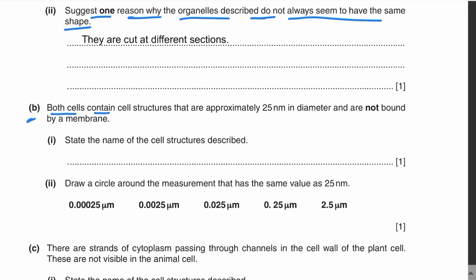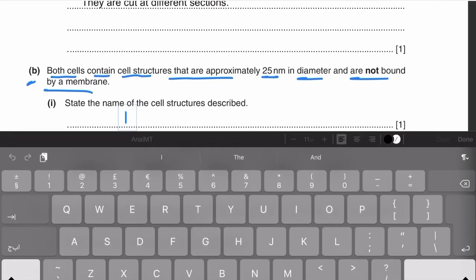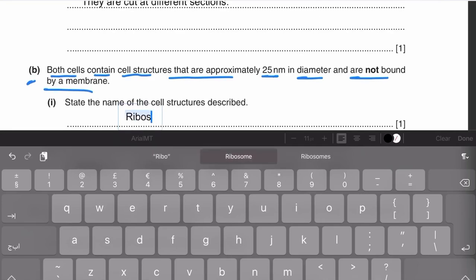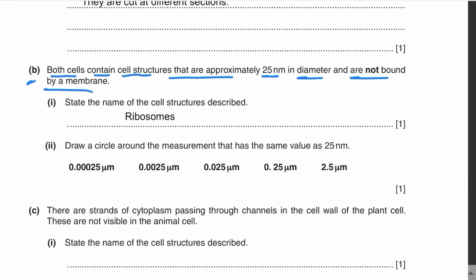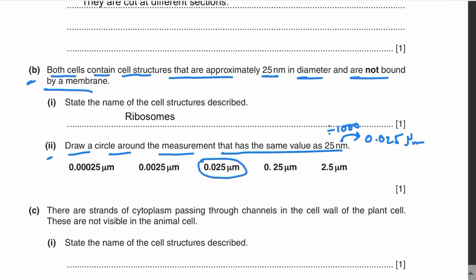Part B: both cells contain structures approximately 25 nanometers in diameter that are not bound by a membrane. These are ribosomes — non-membrane bound organelles approximately 25 nm in diameter. To find the measurement equal to 25 nanometers, we convert by dividing by 1000: 25 nm equals 0.025 micrometers. So we circle 0.025 micrometers.